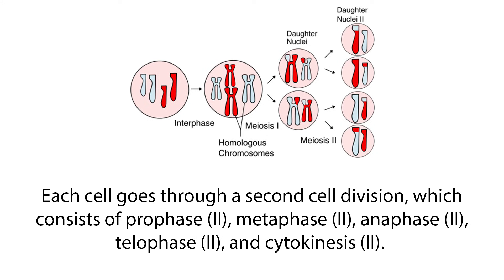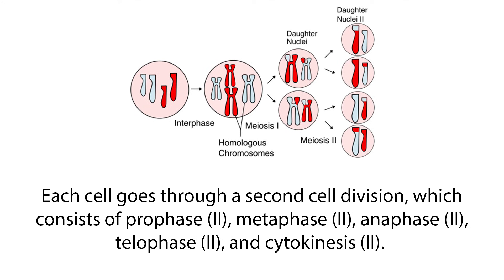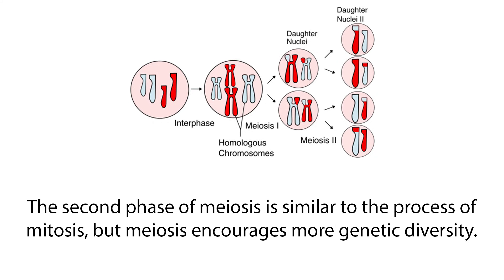Each cell goes through a second cell division, which consists of prophase 2, metaphase 2, anaphase 2, telophase 2, and cytokinesis 2. The result is four daughter cells, each with different single sets of chromosomes. The daughter cells are haploid, which means they contain half the genetic material of the parent cell. The second phase of meiosis is similar to the process of mitosis, but meiosis encourages more genetic diversity.